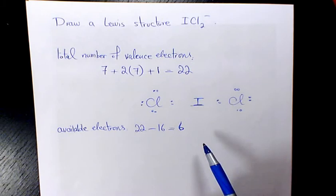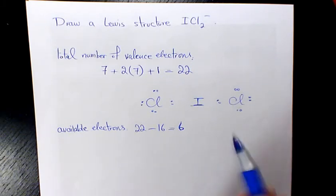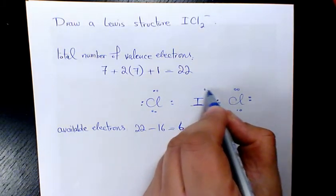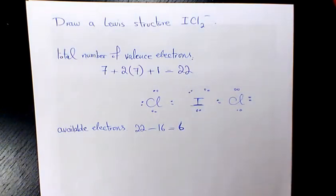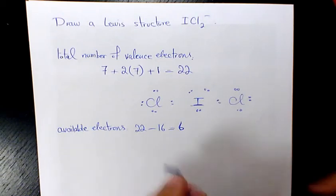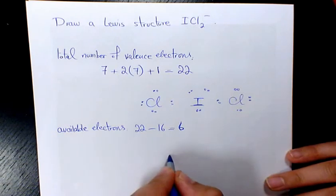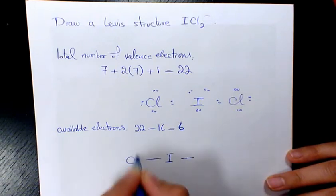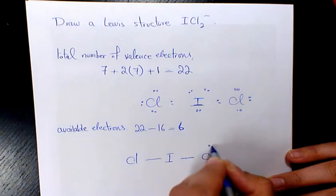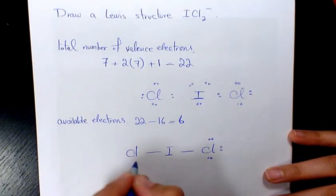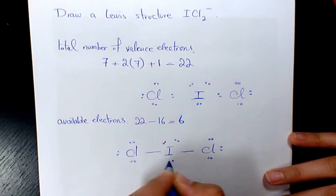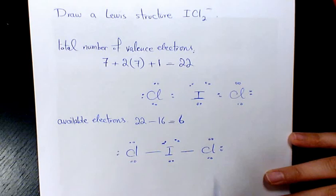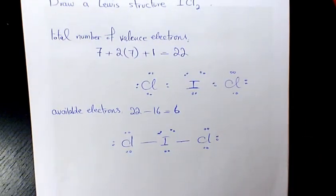We need to place those six electrons on the central atom, so we have 1 2 3 4 5 6. As you can see, iodine in this case doesn't follow the octet rule — that's why it's going to look like that, with three lone pairs around I.